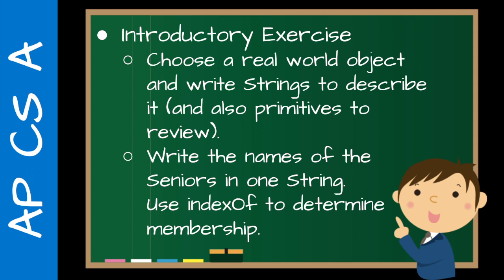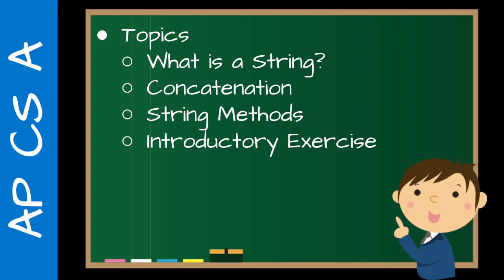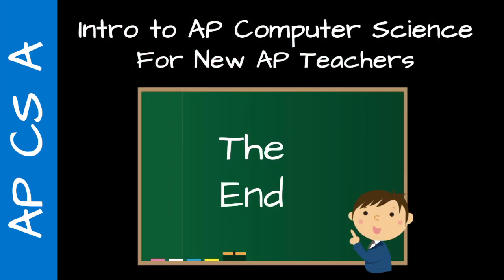Then use indexOf to determine membership: is Bob a senior? Yes, because the index is greater than negative one. Is someone else a senior? No, because indexOf returns negative one. We're getting students used to the idea of sets and collections, and testing conditions. This skill is really useful later for answering free response questions on the AP exam. So we covered what is a string, concatenation, the five AP string methods, and things to watch out for when teaching this. Thanks for watching — see you next time.